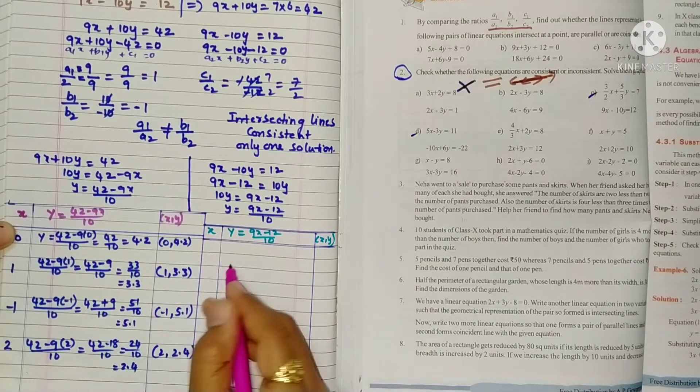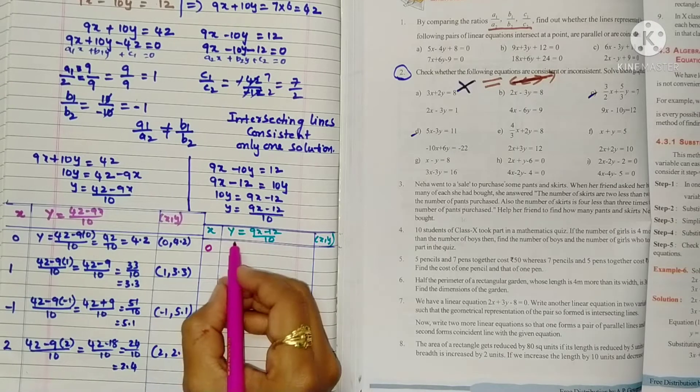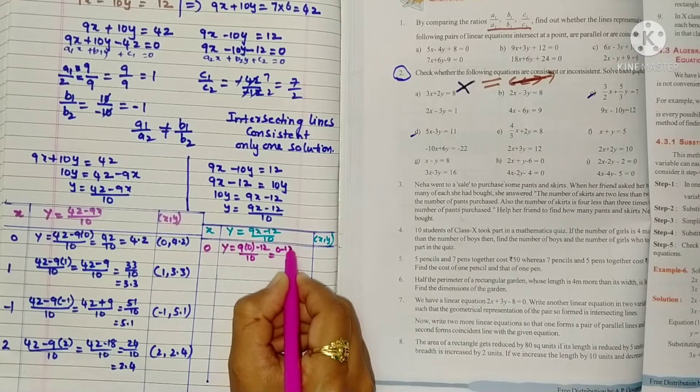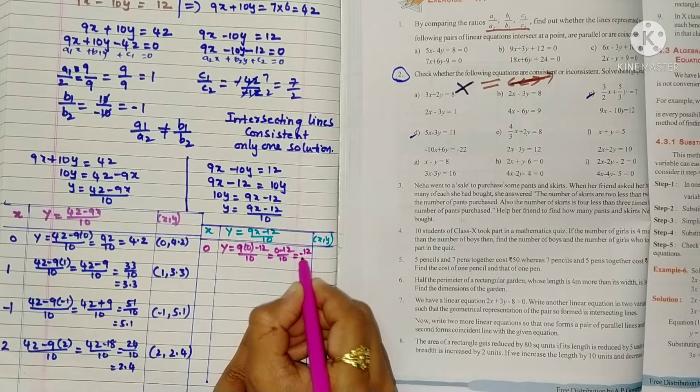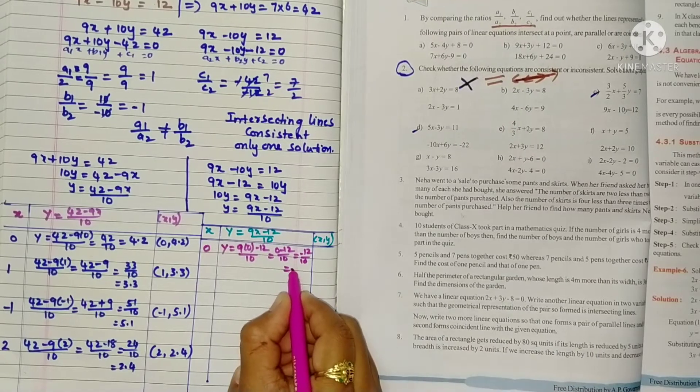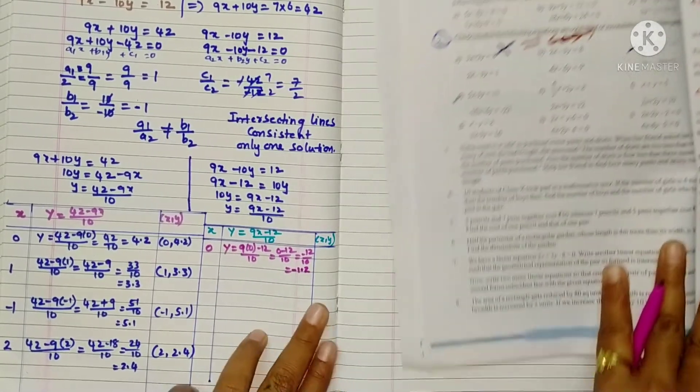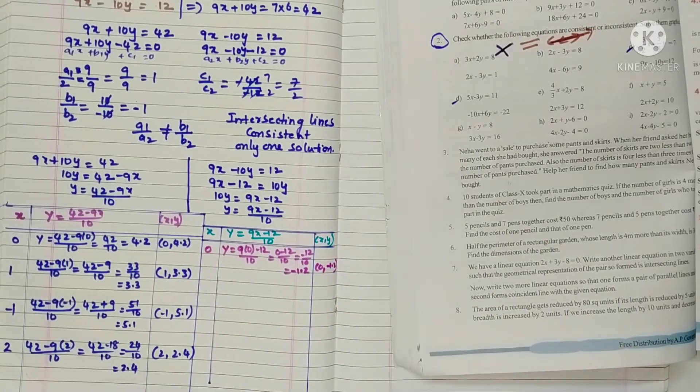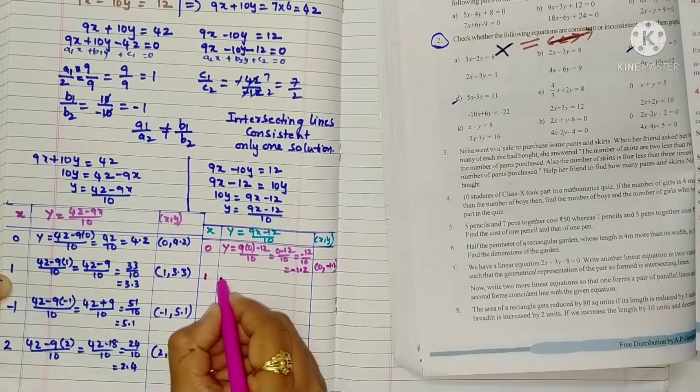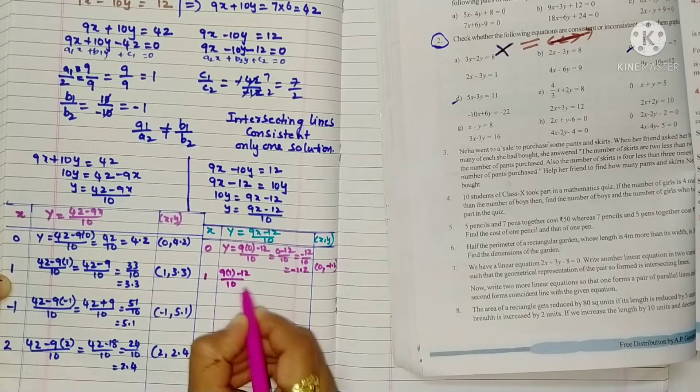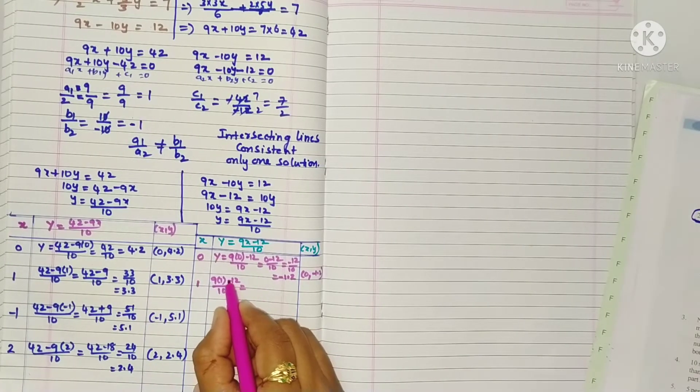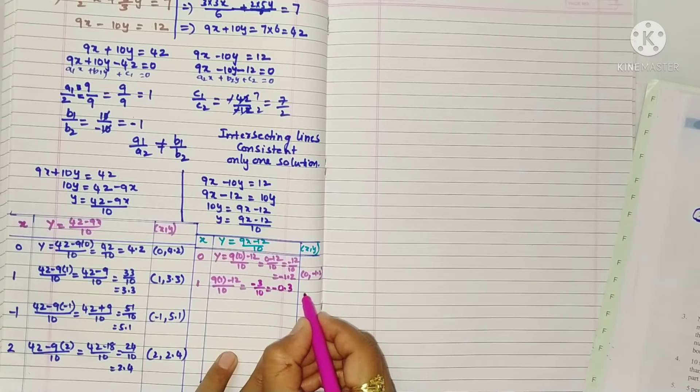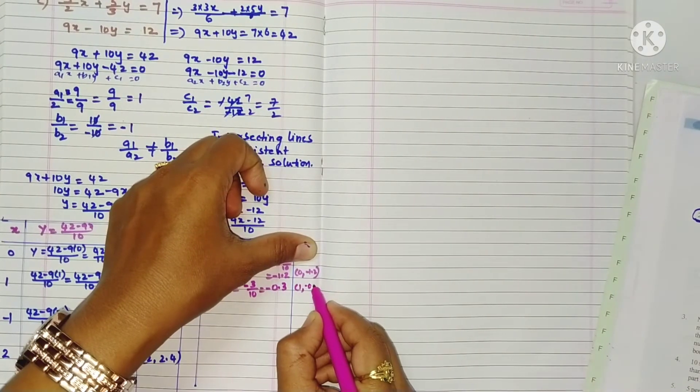For the second equation also, we'll take the same numbers. x is 0. So y equals 9 into 0 minus 12 by 10, that's 0 minus 12 by 10, which is minus 12 by 10, that's minus 1.2. x value 0, y value minus 1.2. Next x equals 1, so 9 into 1 minus 12 by 10. 9 minus 12 is minus 3. Since the bigger number is 12, it's minus 3 by 10, so minus 0.3. x value 1, y value minus 0.3.